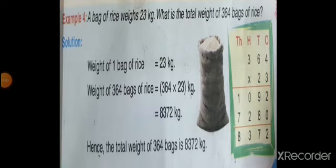Example number 4. A bag of rice weighs 23 kg. What is the total weight of 364 bags of rice? You have given quantity in 1 bag of rice. You will have to find out quantity in more bags of rice.